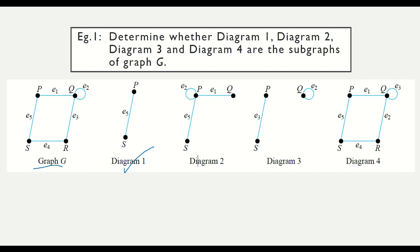For Diagram 2, P to Q is connected by H1, P to S is connected by H5, and there is a loop — whereas graph G has no loop. This is not a subgraph because the loop is connected at vertex Q here, whereas in graph G it would be at vertex P.